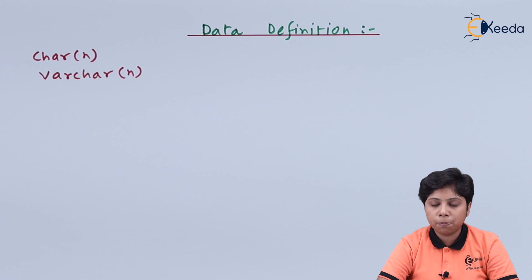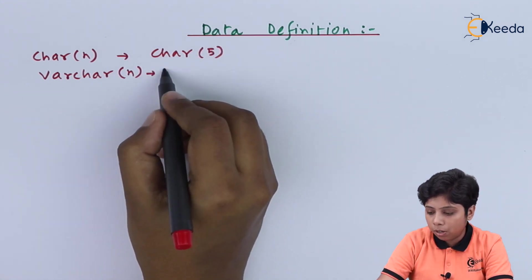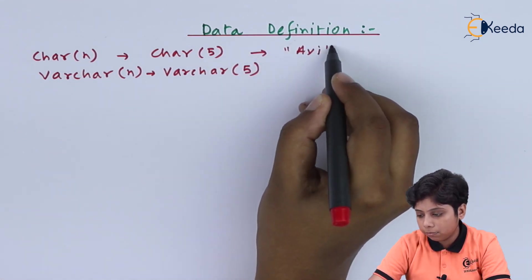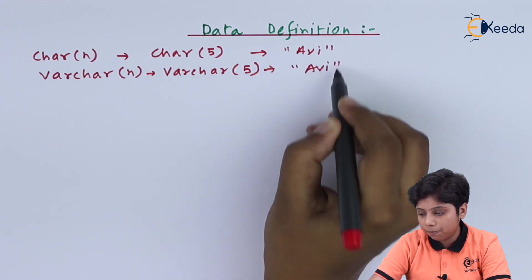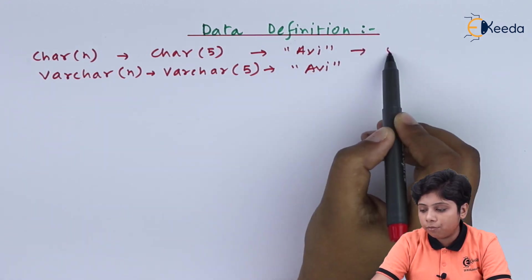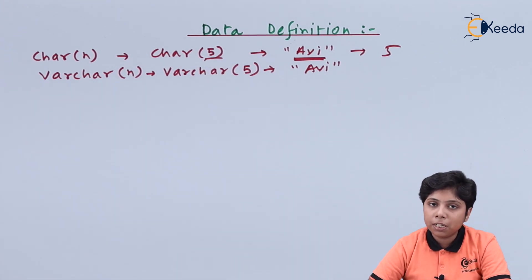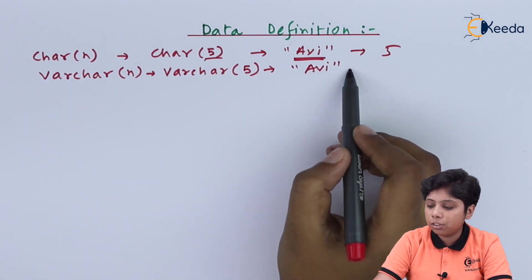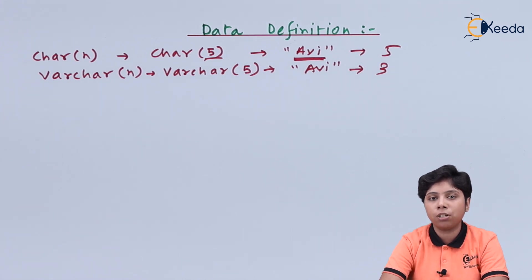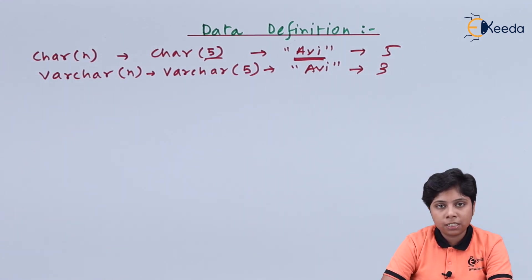The main difference between CHAR and VARCHAR is: suppose we are storing a value in CHAR(5) and also in VARCHAR(5), and the actual value stored is 'avi'. For CHAR(5), it will store five characters even though the value has only three characters. But for VARCHAR(5), it will store only three characters because it is a variable character type — it stores only the characters in the actual value, not up to the maximum allowable limit.